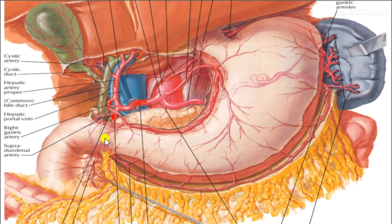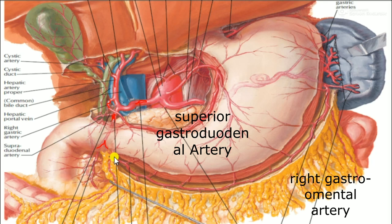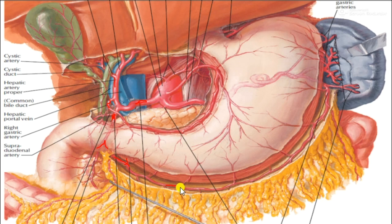The gastroduodenal artery has two branches: the superior pancreaticoduodenal artery and the right gastro-omental artery.